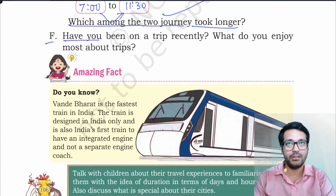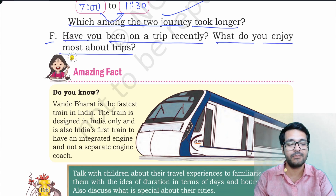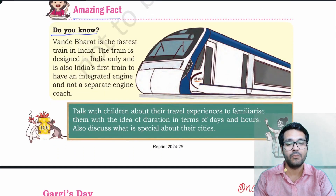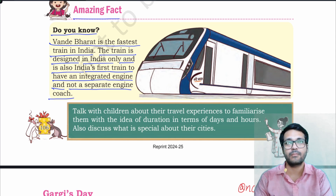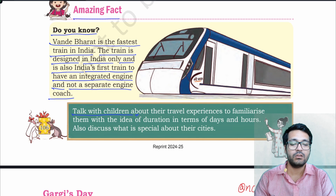F: Have you been on a trip recently? What do you enjoy most about trips? Amazing fact — do you know? Vande Bharat is the fastest train in India. The train is designed in India only and is also India's first train to have an integrated engine and not a separate engine coach. Note to the teacher: Talk with children about their travel experience to familiarize them with the idea of duration in terms of days and hours.